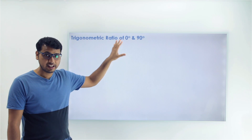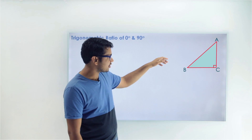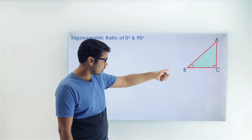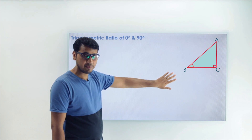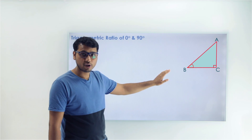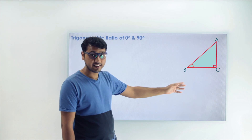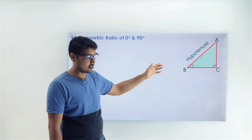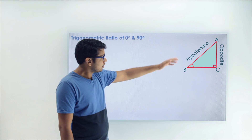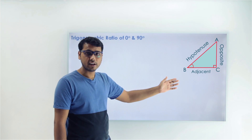To find these trigonometric ratios, first of all we need a triangle. So let's assume a right angle triangle A, B, C, and in this right angle triangle let's focus on angle B. Now for angle B, the hypotenuse is always opposite to the right angle. Since the right angle is at C, AB will be our hypotenuse. And since we are focusing on angle B, AC will be the opposite and BC will be our adjacent.